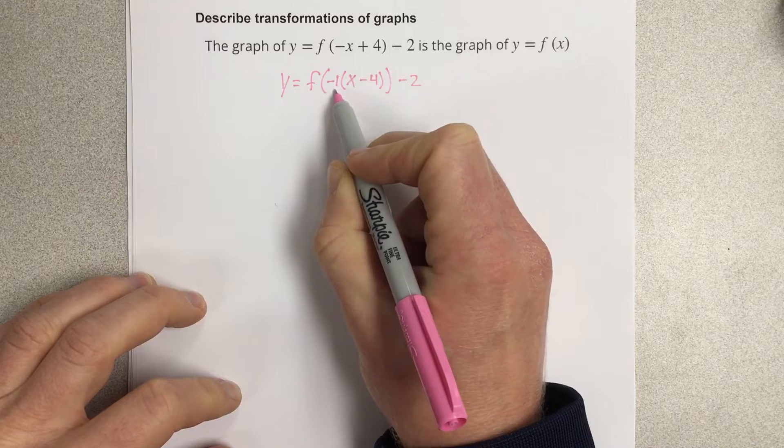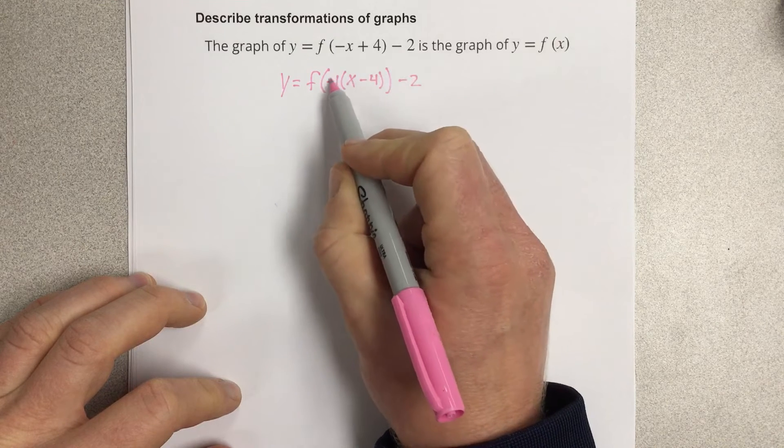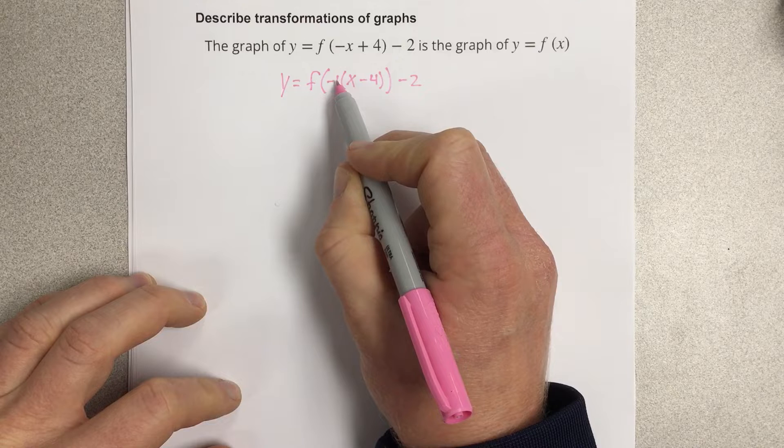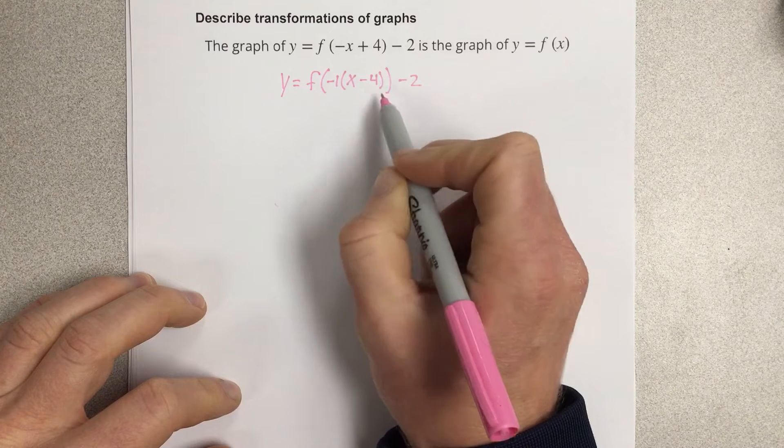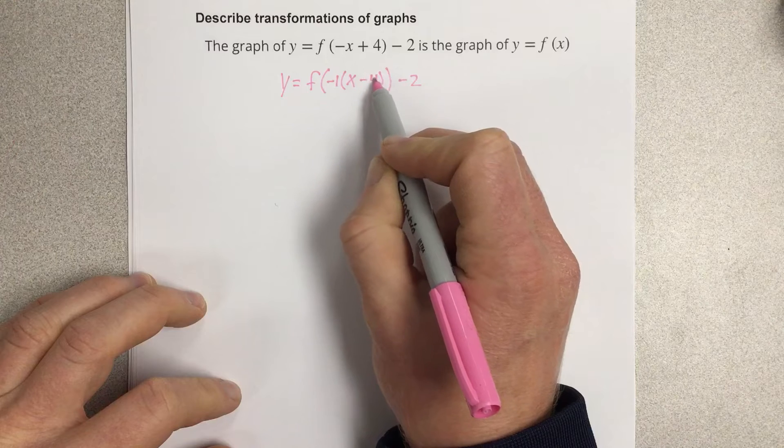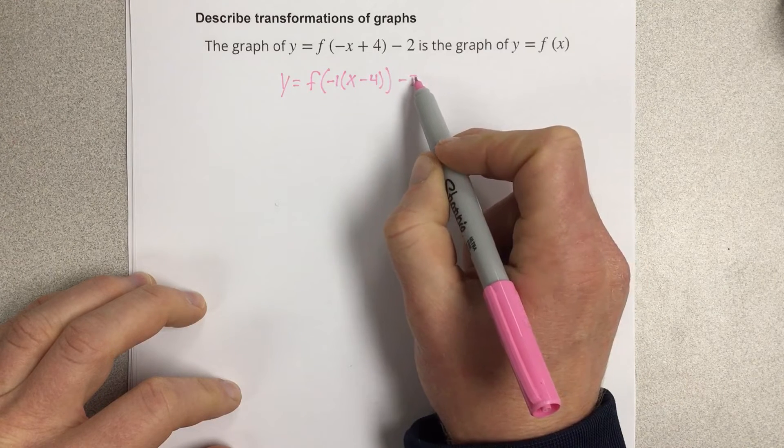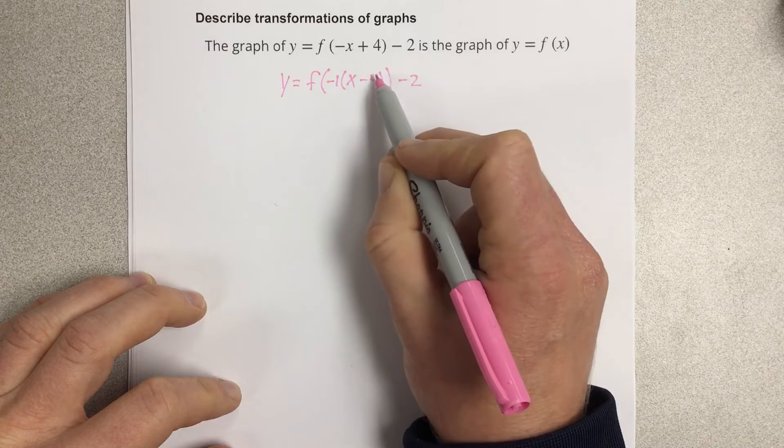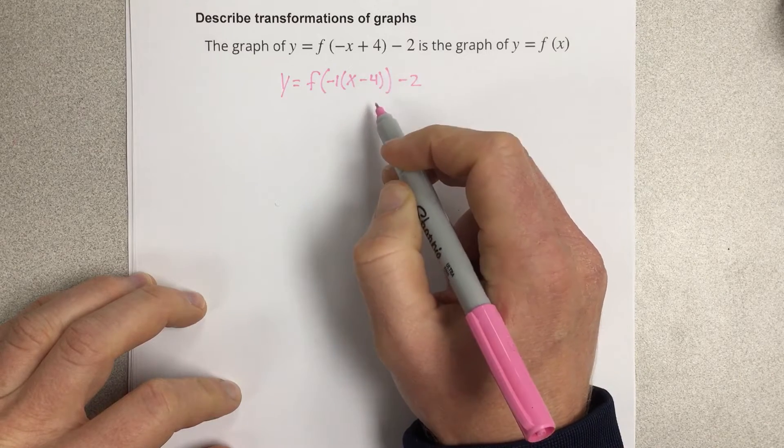The reason we factor the negative 1 out is that we can see what the leading coefficient is, which tells us how we're reflected. And then we can also see what our horizontal shift will be, and it doesn't affect our vertical shift but lets us know what our horizontal shift is.